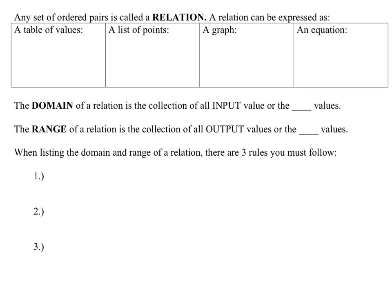Welcome back. Today we're going to learn about relations, domain, range, and function. Two of these words you've already learned — domain and range — but the other one you may not know is relation. So far this whole unit where we're graphing ordered pairs and lines, those are all relations. Any set of ordered pairs is called a relation.